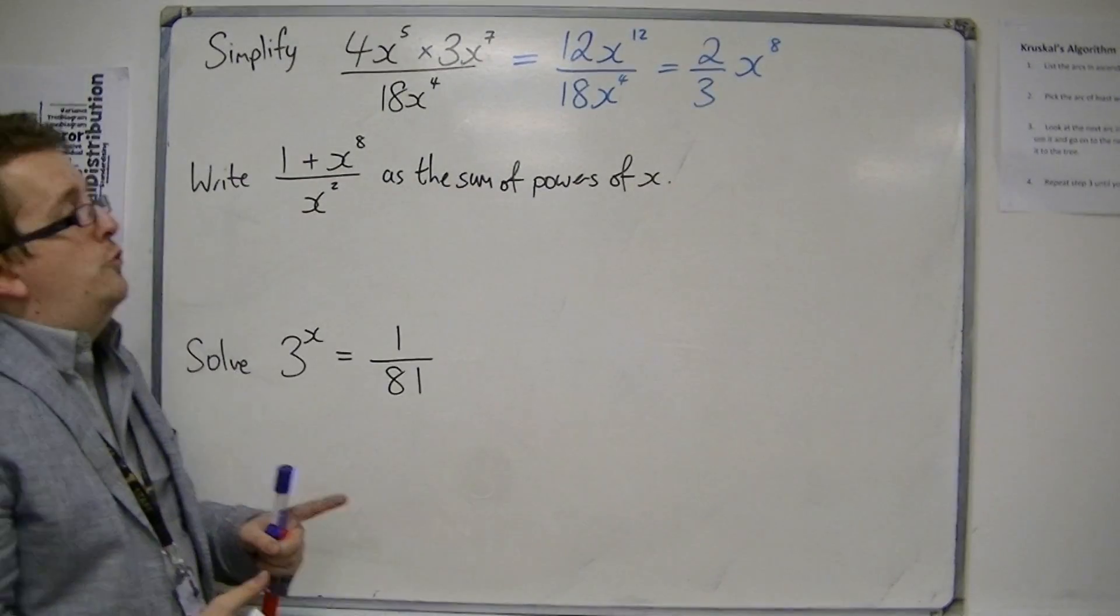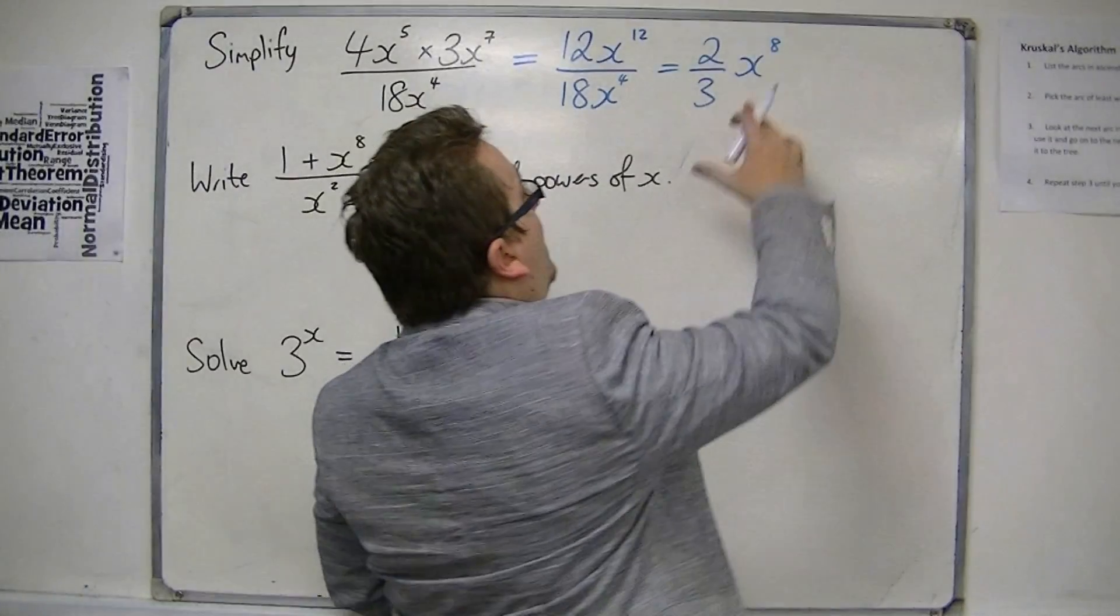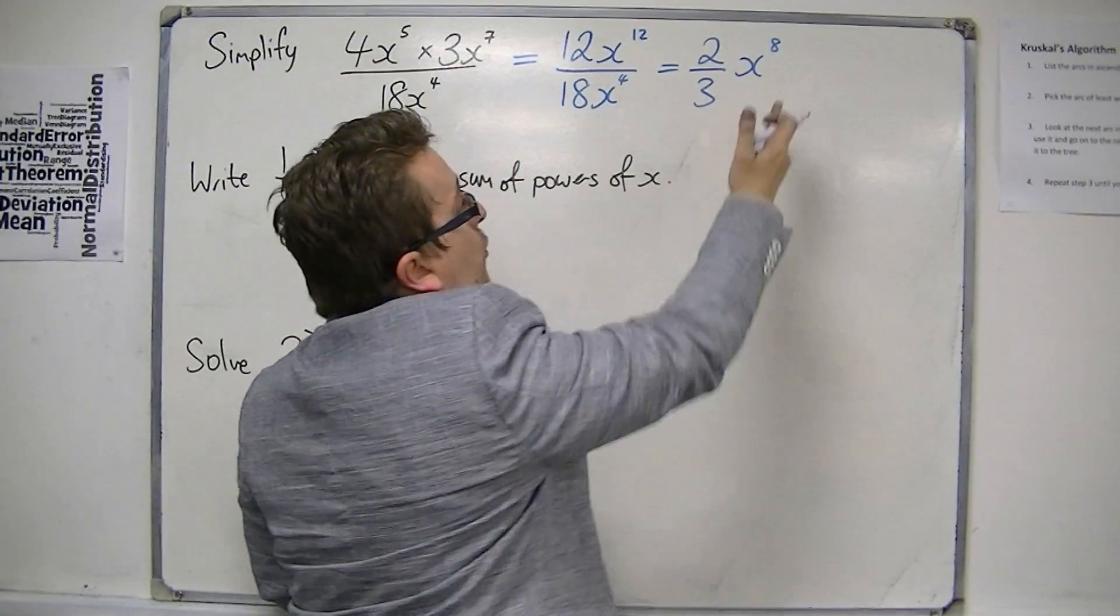Now you can write that in several different ways. You can write that as 2x to the 8 all over 3, or as I have done there.